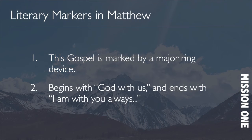Something else Matthew does, which is really neat, is that he uses literary markers. There's what we call a ring device in Matthew — it begins and ends with the same message. It begins with the message of Jesus being called Emmanuel, which means 'God with us.' It ends with Jesus saying to his disciples, 'I'll be with you always, to the very end of the age' — Matthew 28. So it begins and ends with the message that God is with us and his kingdom is present.